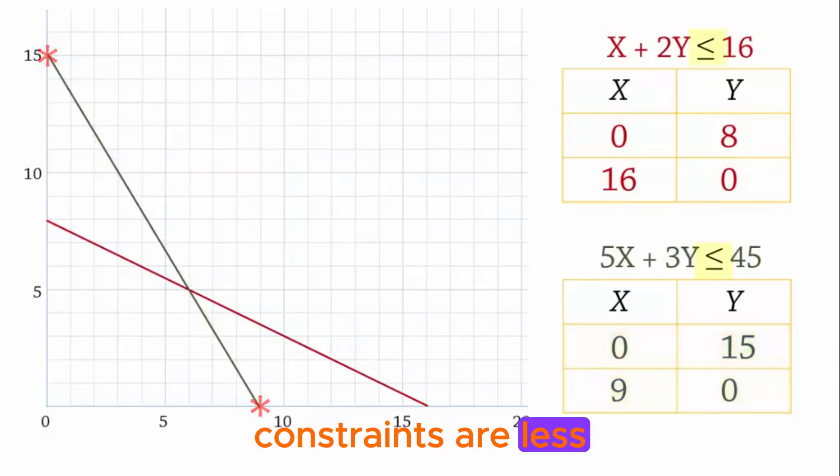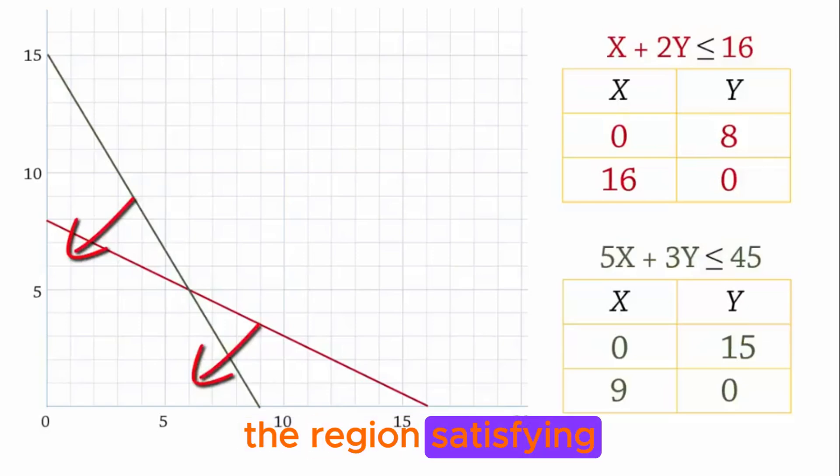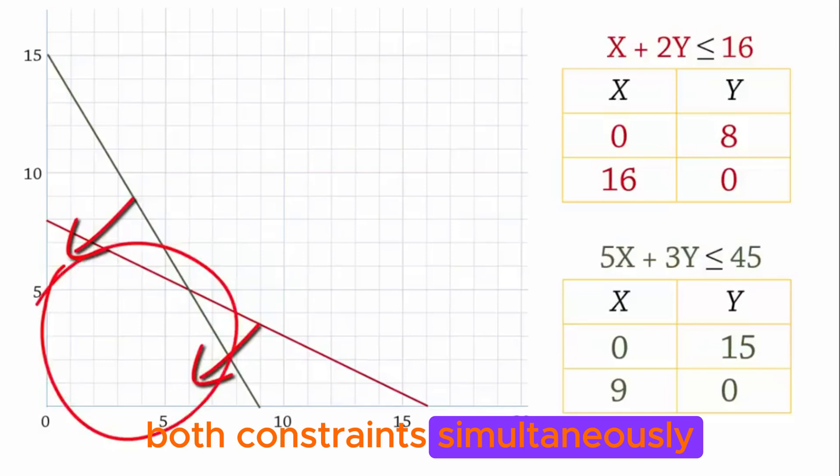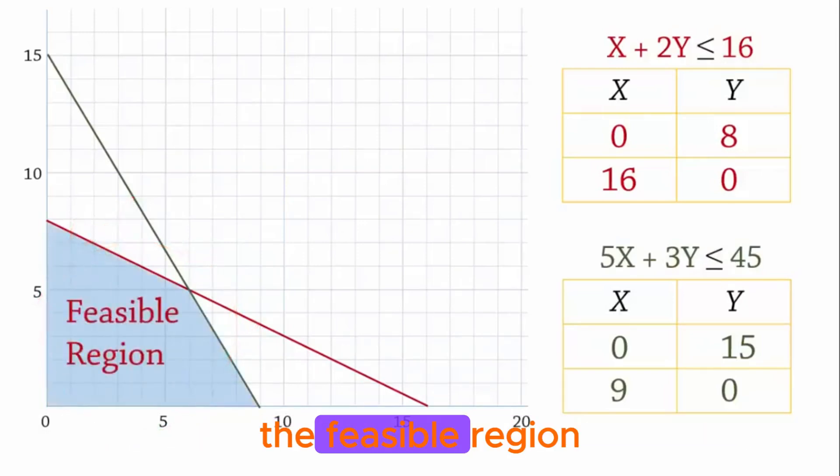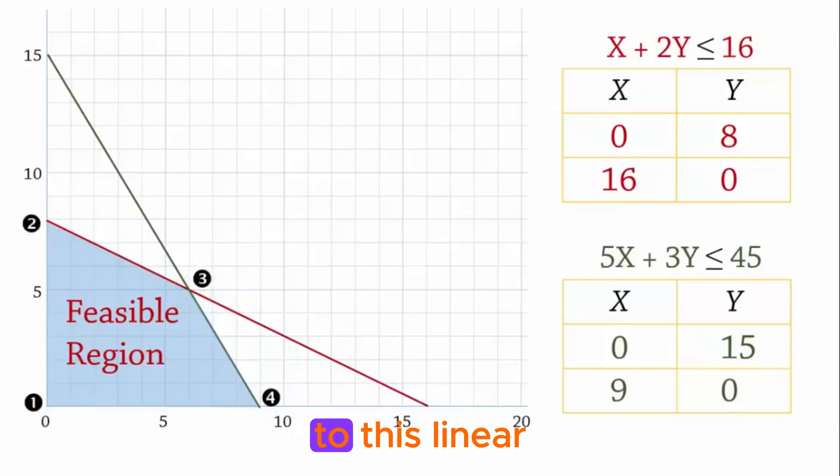Since these constraints are less than or equal to constraints, they will be satisfied in the region below the lines towards the origin. Therefore, the region satisfying both constraints simultaneously is this one here. It is called the feasible region. That is, any point in this region is a feasible solution. In particular, the optimal or best solution will occur at an extreme point or corner point of the feasible region. These are the corner points for the feasible region. Let's label them 1 to 4. The optimal solution to this linear programming problem will occur in at least one of them.